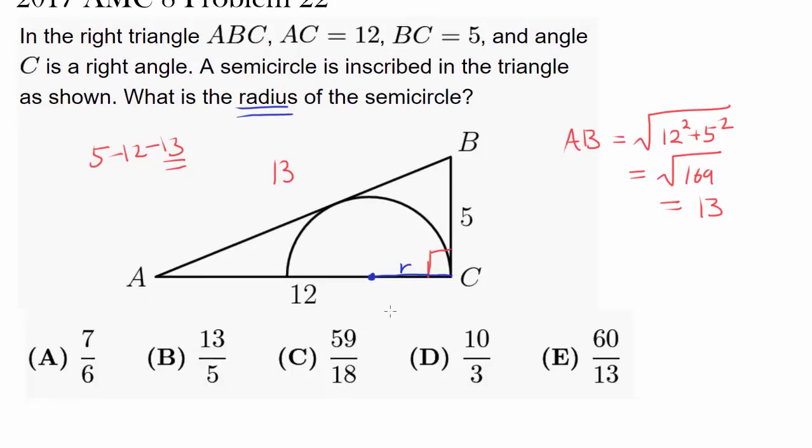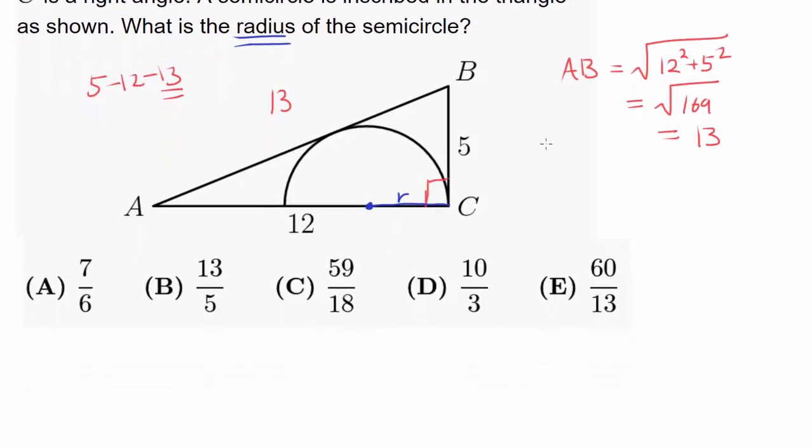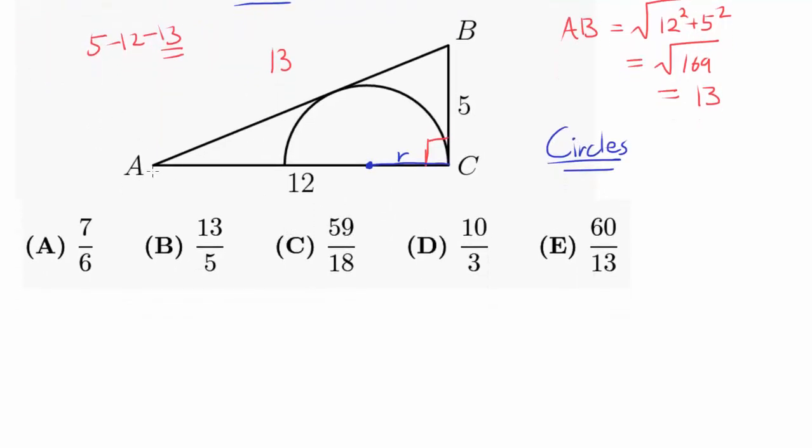How can we solve this? Circles are usually easier to work with than semicircles. So one thing we can try is to reflect this triangle once more, creating the same congruent triangle on the other side and continuing the circle, so we have the entire circle sitting inside. How will this help us?